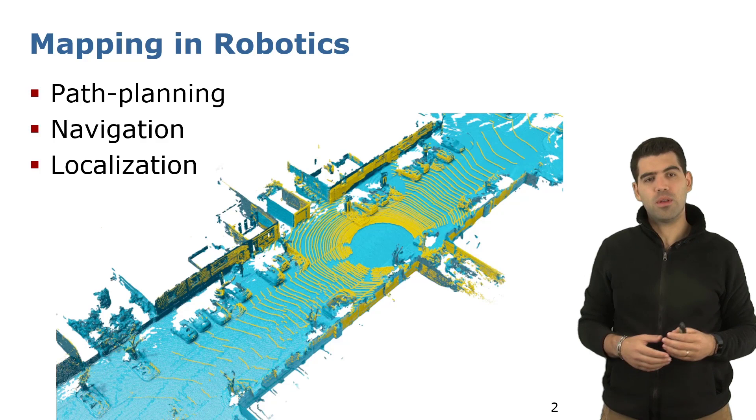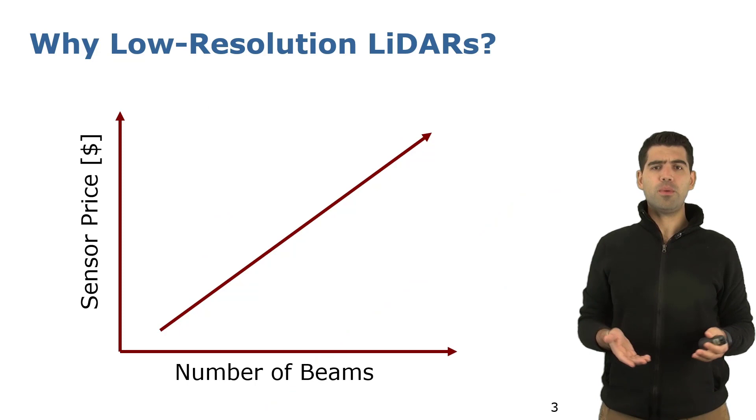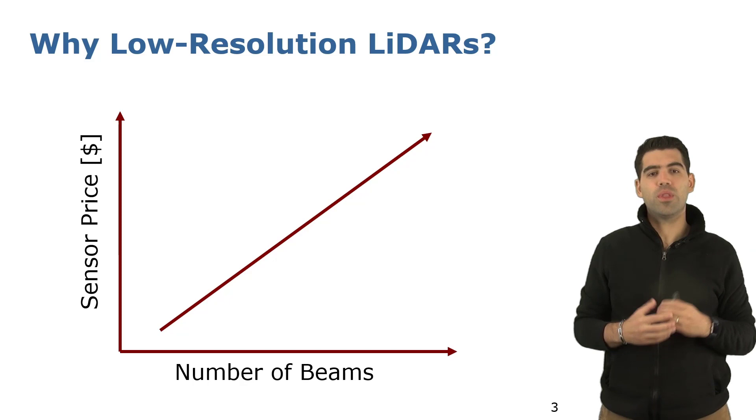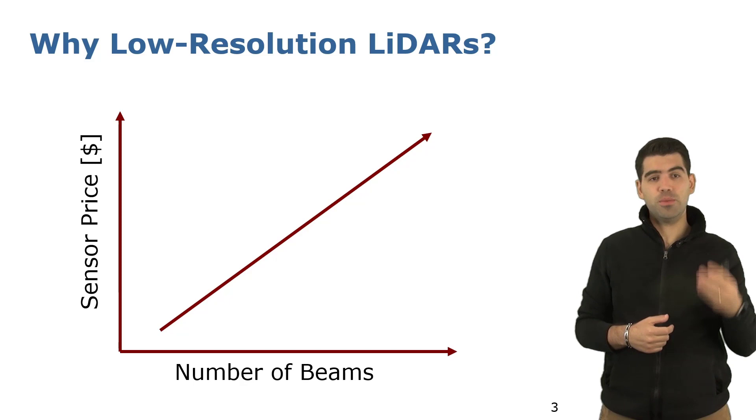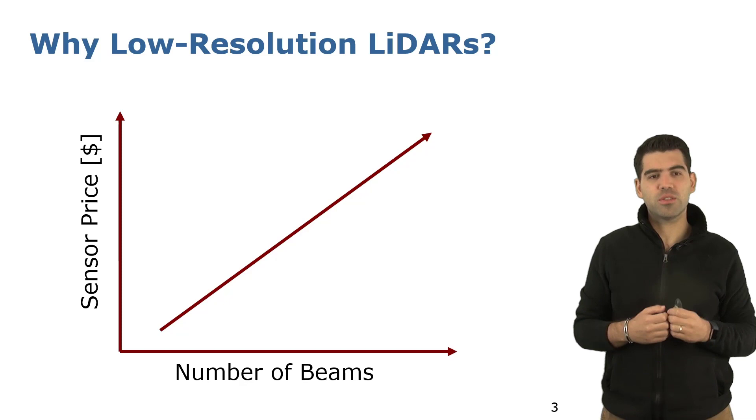In our work, we investigate how to use low-resolution LiDARs to create a map of the environment. You may be wondering why we are interested in low-resolution LiDARs. As shown here in the picture on my left, the price for LiDAR sensors scales roughly linearly with the number of beams and thus the resolution of the scanner. The cheaper the sensors are, the easier it is to deploy robots in the real world. Therefore, we investigate whether we can build a mapping system that generates dense models but only requires low-cost sensors.